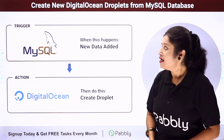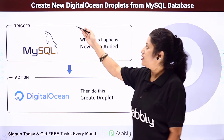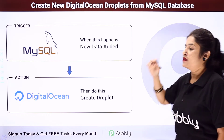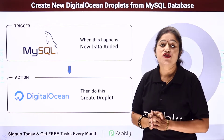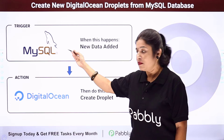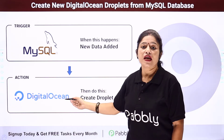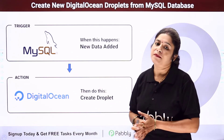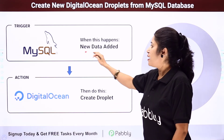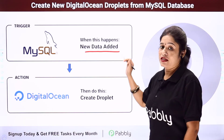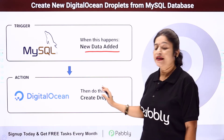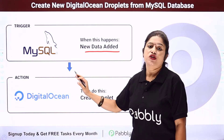In this video, we are going to learn how you can create new DigitalOcean droplets from a MySQL database. Let's take an example where you are using MySQL for your database management system and DigitalOcean as your cloud hosting platform. You want that whenever data is added to your MySQL database table, automatically a new droplet should get created in your DigitalOcean account using those details.